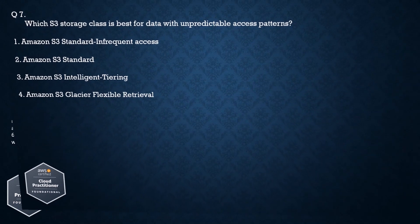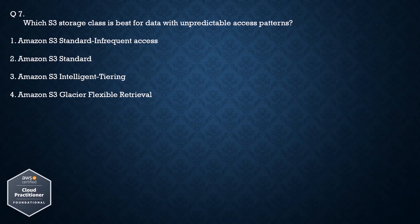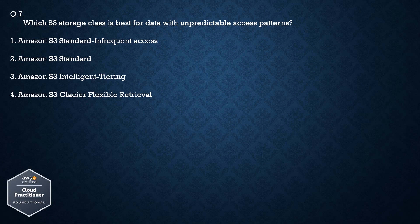Question number 7: Which S3 storage class is best for data with unpredictable access patterns? Option 1: Amazon S3 Standard Infrequent Access. Option 2: Amazon S3 Standard. Option 3: Amazon S3 Intelligent Tiering. Option 4: Amazon S3 Glacier Flexible Retrieval.